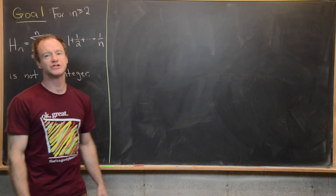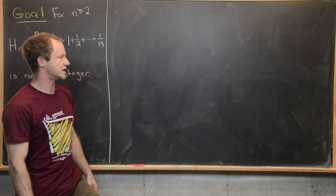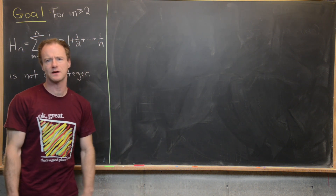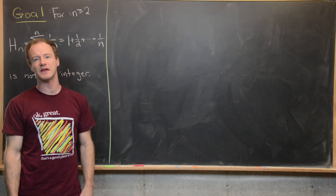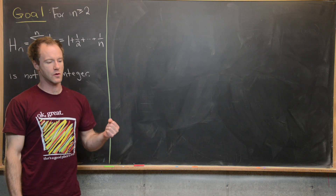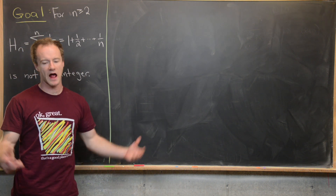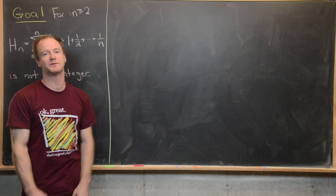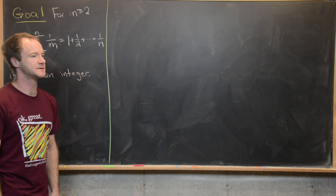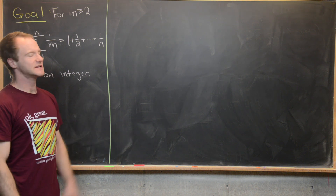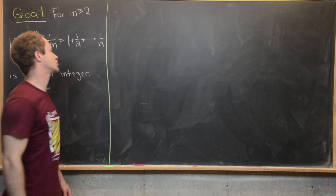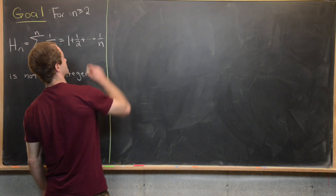We just did some exploration and saw that harmonic numbers seem to be of the form an odd number over an even number after reducing to lowest terms. Let's see if we can show that is true in general.